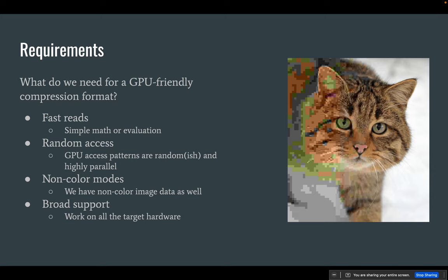What do we need from a GPU-friendly compression format? First, since we're going to be using this in high-performance environments through shaders and the like, we need to be able to read them quickly. Whatever scheme holds the data needs to be able to be decompressed fairly readily into raw values. We also need random access — the GPU is a highly parallel machine and each thread can be doing its own thing, so you need to be able to sample an image without doing a lot of work around the rest of the image just to get one sample back. We also have cases where we're not storing color data, so something targeting only color isn't necessarily a great fit. And lastly, we need good support across a broad range of hardware.